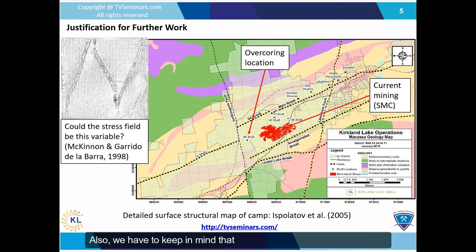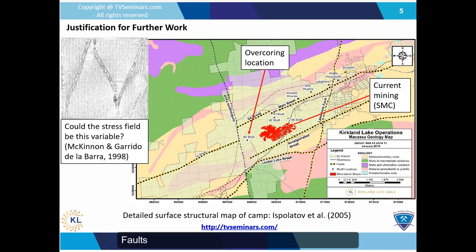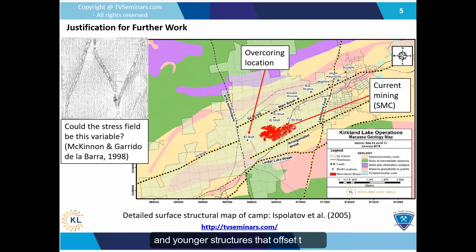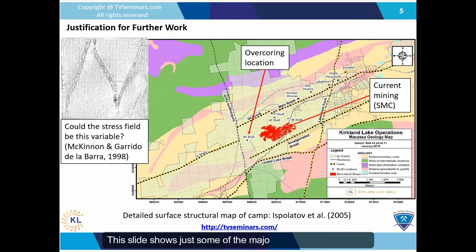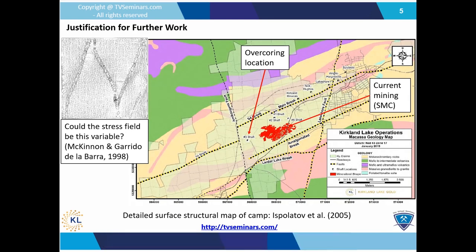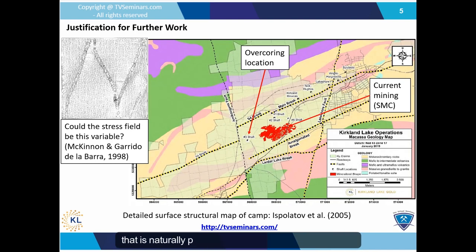We also have to keep in mind that faults may change the stress tensor because they are a weakness that limits stress. Faults are the reason there is gold in Kirkland Lake. There are several major structures that host ore, and younger structures that offset those. This slide shows just some of the major structures in the camp, but there are many more which have been mapped. So we have a structurally complex environment that is naturally prone to having a variable stress tensor.